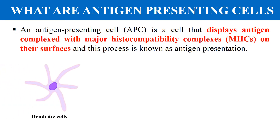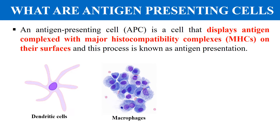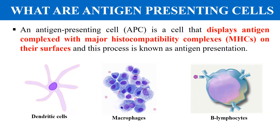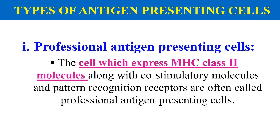Examples of antigen presenting cells include dendritic cells, macrophages, and B lymphocytes. Antigen presenting cells are categorized into two groups: professional antigen presenting cells and non-professional antigen presenting cells.